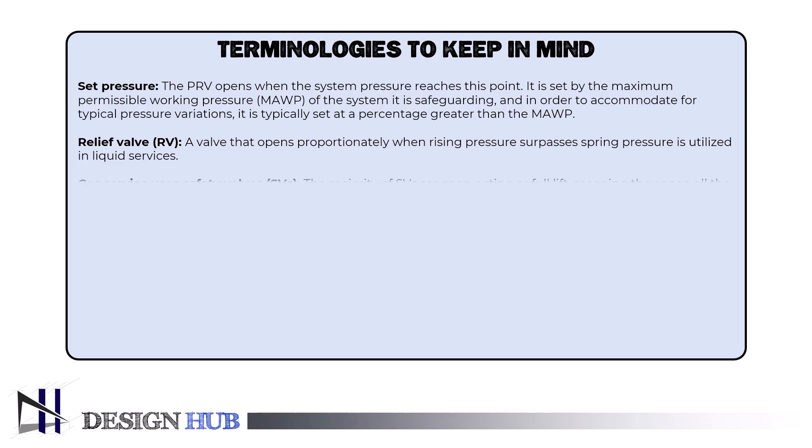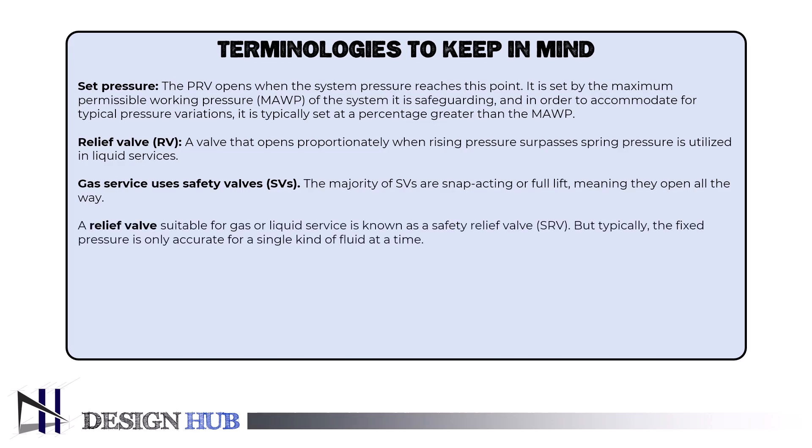The third is safety valves, SVs: used in gas service, with the majority being snap acting or full lift, meaning they open all the way. The fourth is a safety relief valve, SRV: suitable for gas or liquid service, but typically the fixed pressure is only accurate for a single kind of fluid at a time. Fifth is pilot-operated relief valves: relief valves activated remotely from a pilot valve attached to the system pressure upstream.